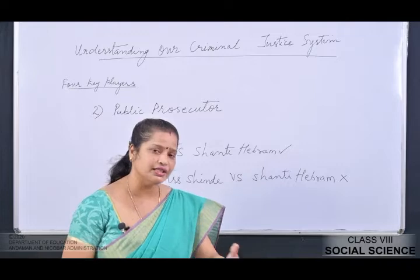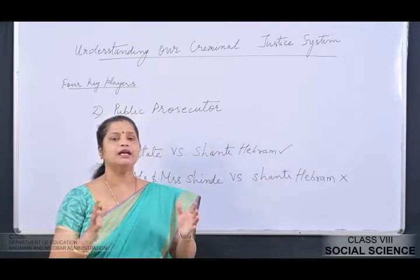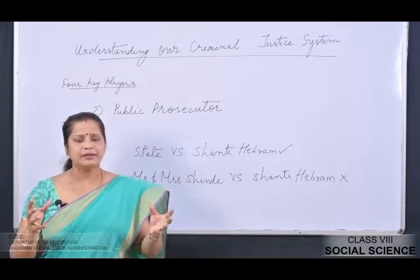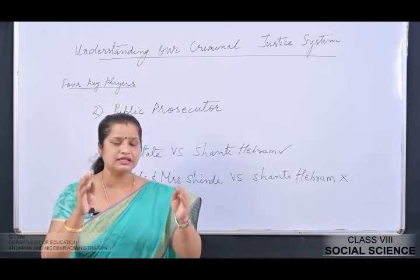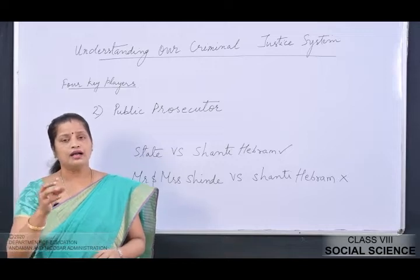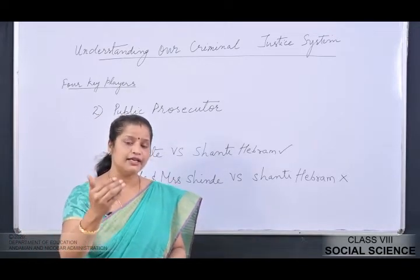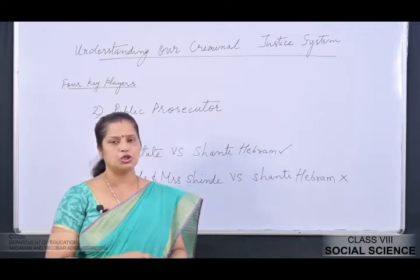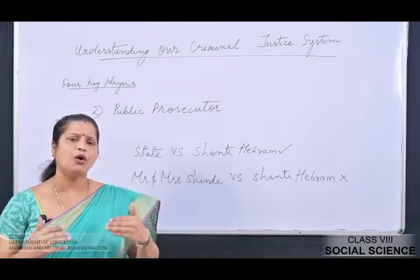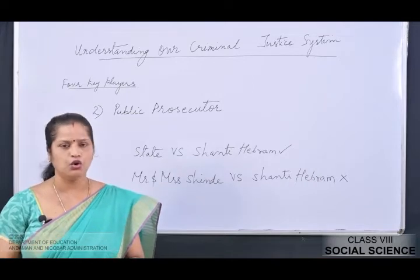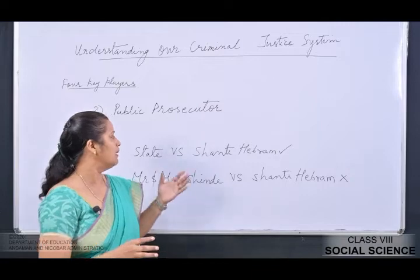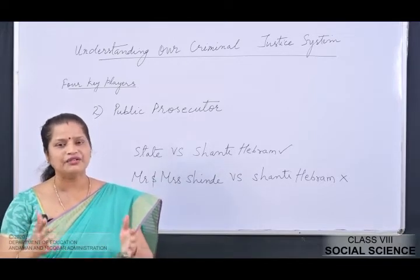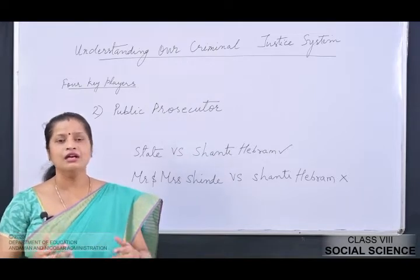Once the police files a charge sheet, the main function of the public prosecutor is to place all the evidences and statements of all witnesses before the court in an impartial manner, so that the court can understand what truly happened. If the public prosecutor plays his role impartially and keeps all evidence and witnesses clearly before the court, it will be easy for the judge to give the verdict.